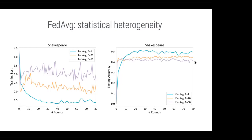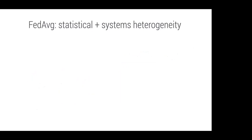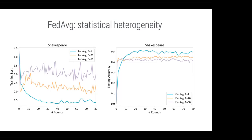The model being averaged here is an RNN — a recurrent neural network — trained for next-word prediction. The Shakespeare dataset takes the complete works of William Shakespeare and models each character in each play as a user in the federated system, so the text data for each character is treated as the data on a device. In response to a question: the batch size is the same across local SGD runs; the only thing being changed is the number of epochs — so this is like local SGD.